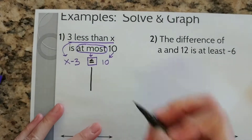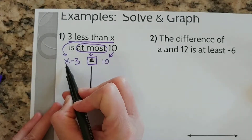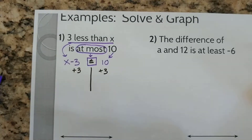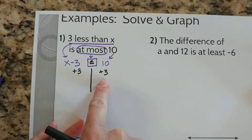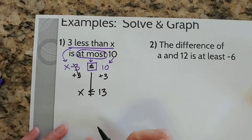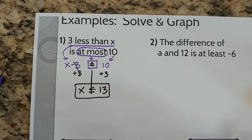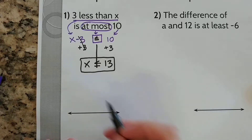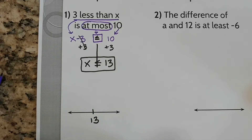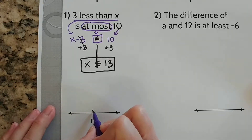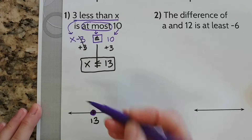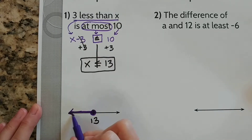Now let's solve it. We know the goal is to get the x by itself, to isolate it. So in order to do that, I would have to add 3. And if I add 3 over here, I will have to add 3 over here. We just got done looking at how if we add the same number to both sides of an inequality, it still remains true. So I get x is less than or equal to 13. I'm going to go ahead and circle that. Now we can graph our solutions — all numbers that are less than or equal to 13. I'm going to put a 13 on my number line. It's going to be a closed circle, and all numbers less than go to the left. So we shade left — those are all of my solutions.